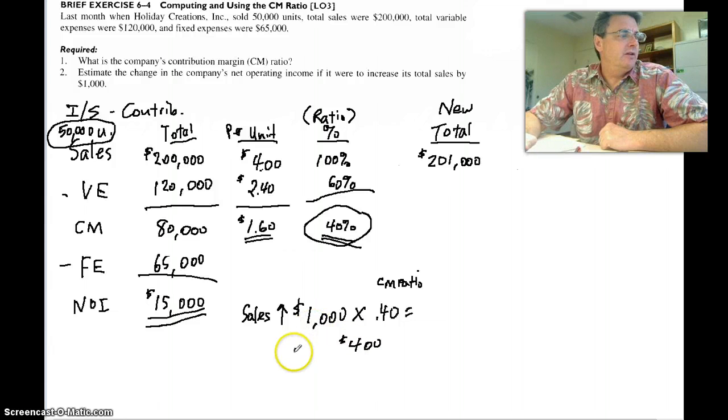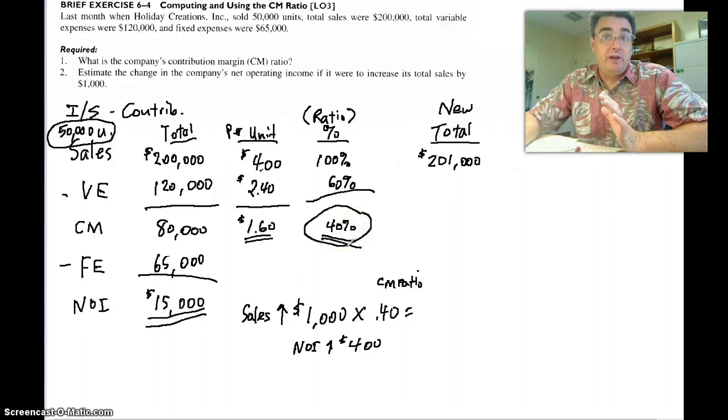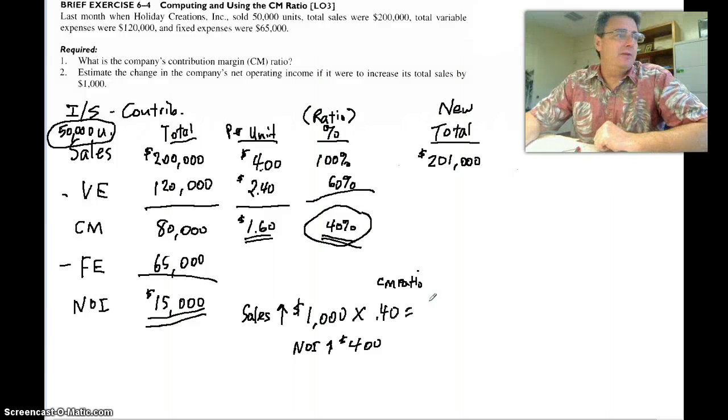A $1,000 times 40% is $400, is it not? That should be the increase in our net operating income. That's why that's such a powerful, helpful number to us. That's our estimate. That's what we think is going to happen.